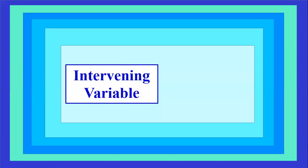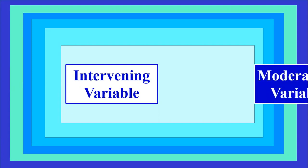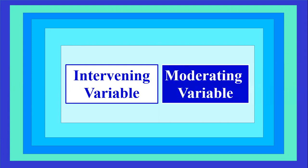These two types are very important and widely used in research globally. The first one is intervening variable, which we also call mediating variable. The other one is moderating variable. Intervening variable and mediating variable are the same — you should remember this. If I ask in an exam about mediating variable, don't be confused. I will also include one intervening variable and one moderating variable in your thesis project, so listen very carefully.